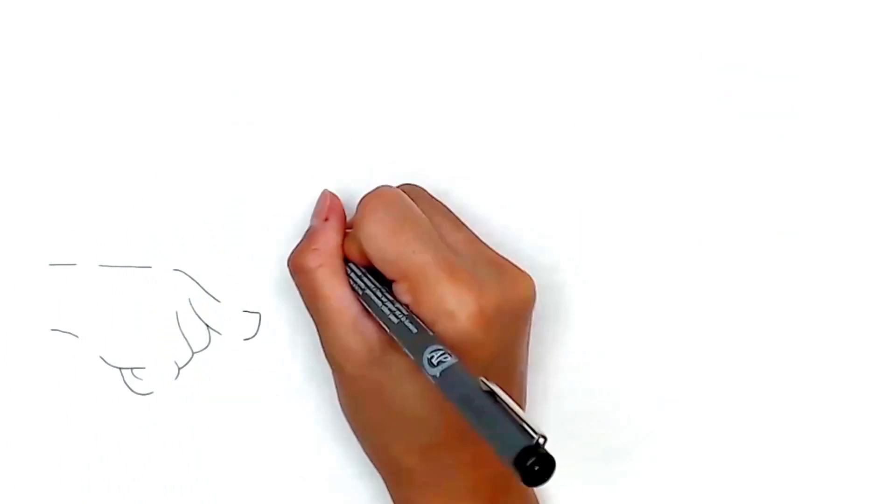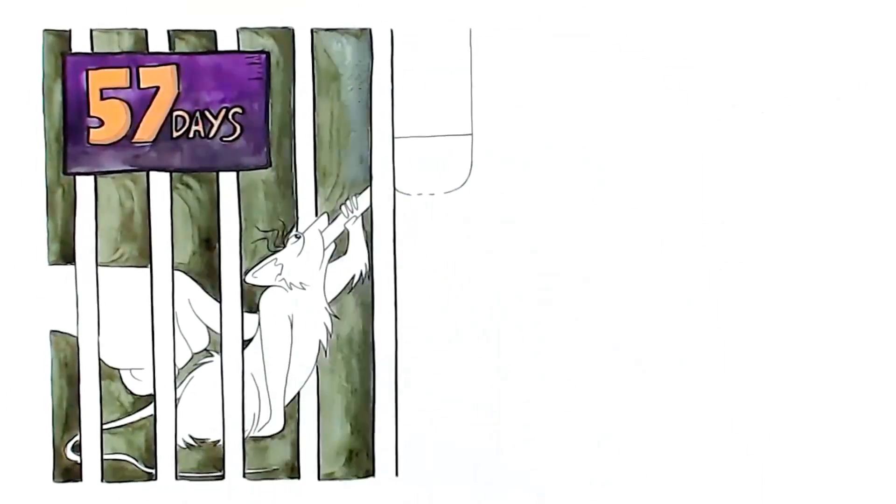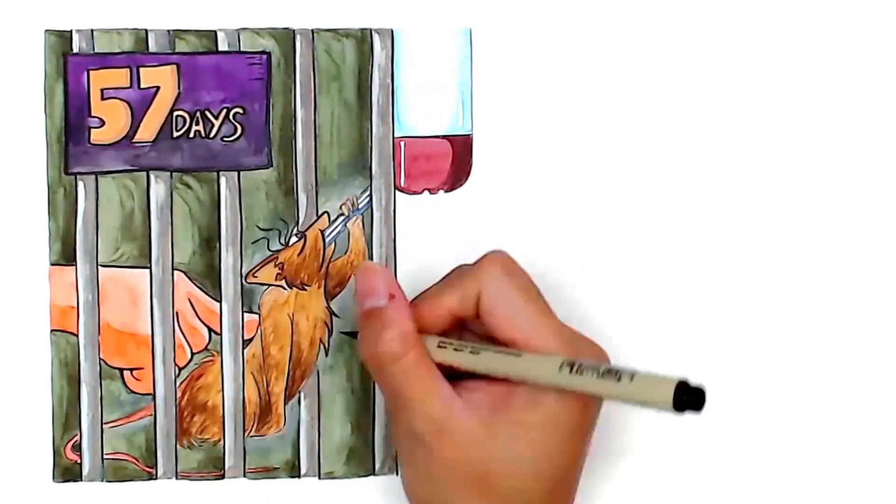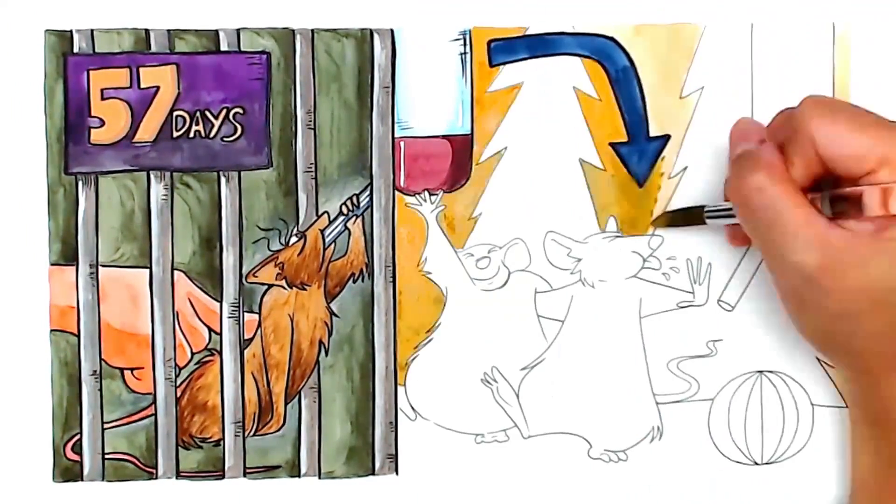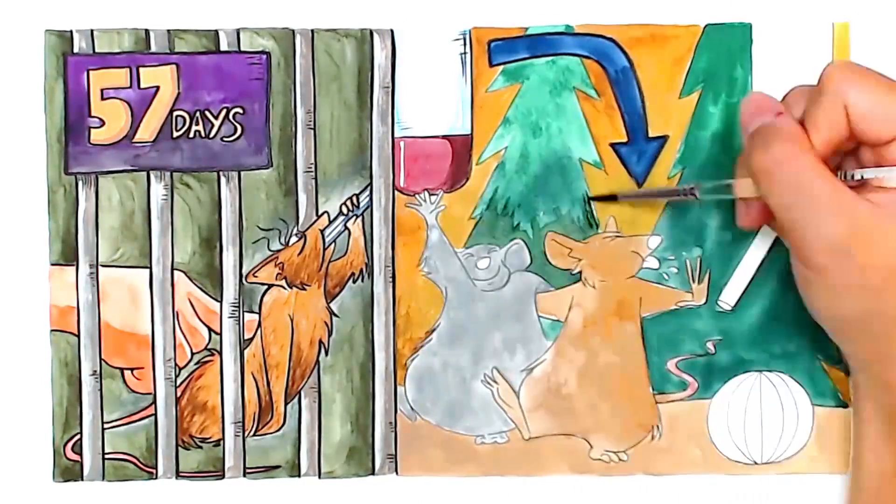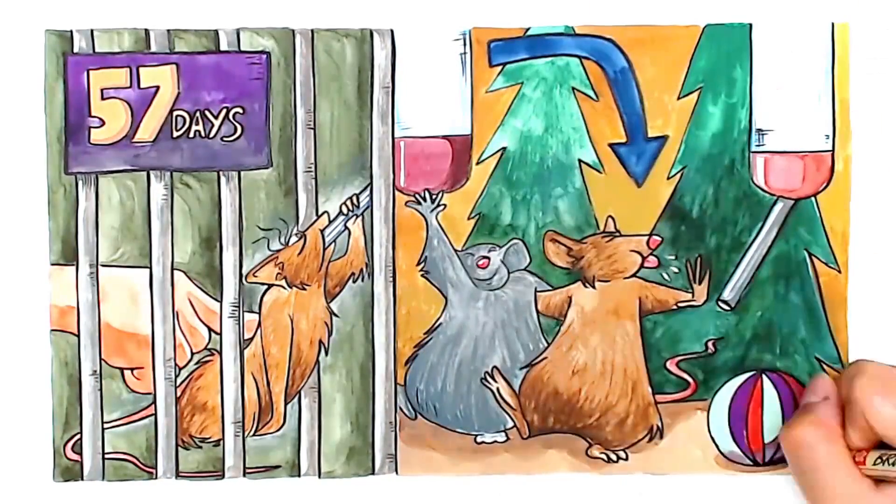The researcher even took the study one step further and had the rats use drugs for 57 days in the lonely cage until they became heavily addicted and then placed them in the rat park. Astonishingly, the rats gradually reduced their drug use until they stopped using them altogether and lived the rest of their lives drug free.